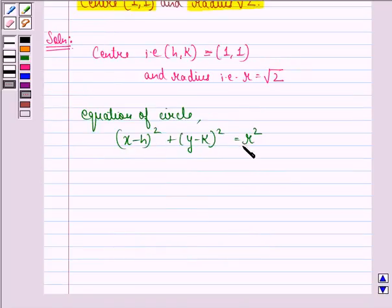And we get (x-1)² + (y-1)² is equal to (√2)².